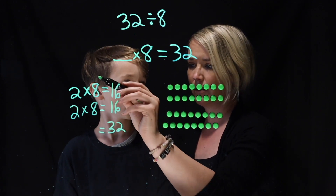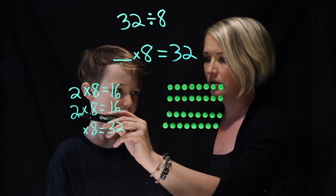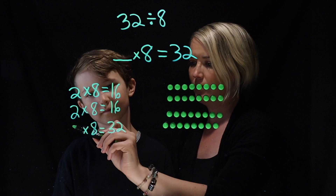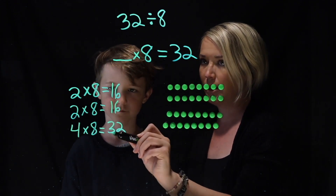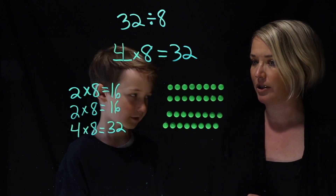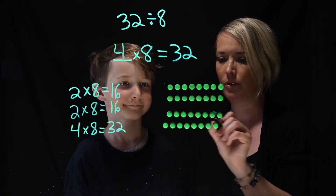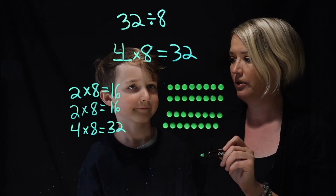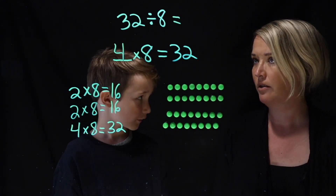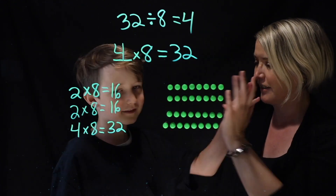And that means what times 8 equals 32? 4 times 8 equals 32. So you added these two: 2 plus 2 gives you 4, so 4 times 8 equals 32 — and that's what we were looking for. So we have 4 groups of 8: 1, 2, 3, 4, and it gives us 32. So what's 32 divided by 8? 4. Awesome. Fantastic. Bye.